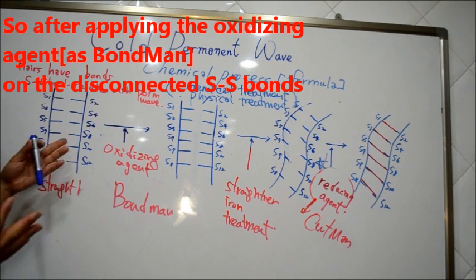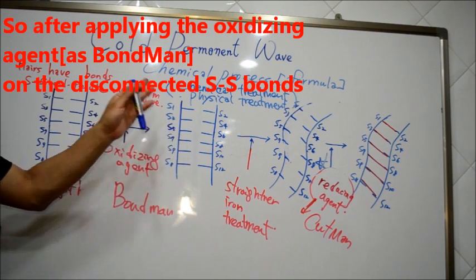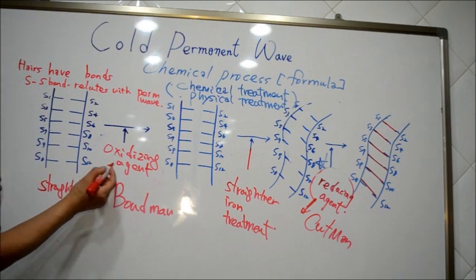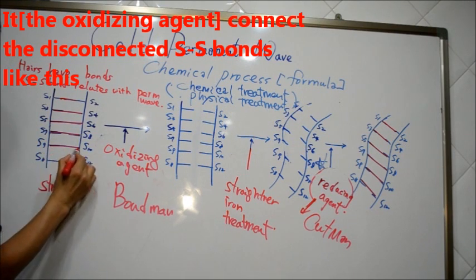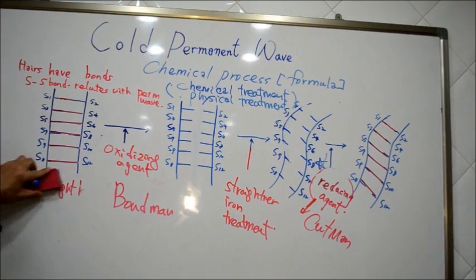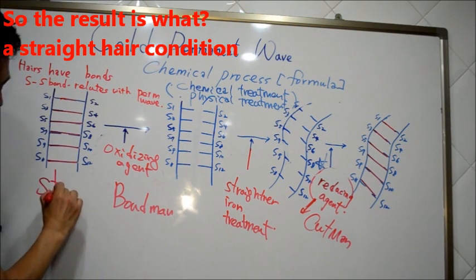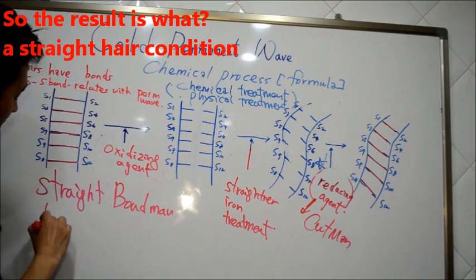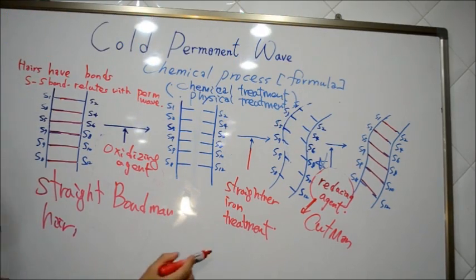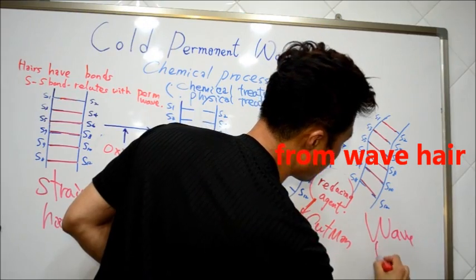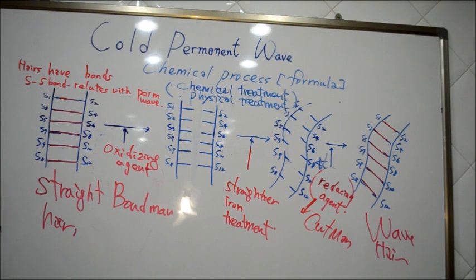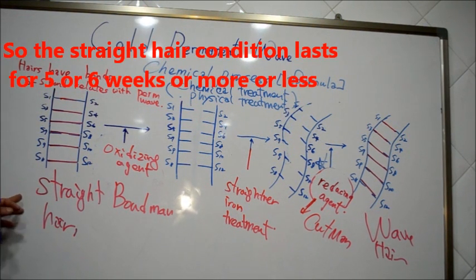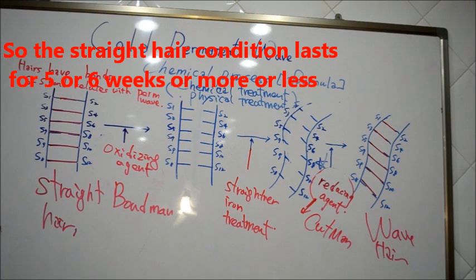So after applying oxidizing agent or reconnecting the S-S bonds, they are connected again like this. So the result will be straight hair instead of wavy hair. The straight hair condition lasts for five to six weeks.